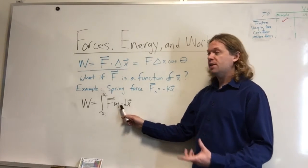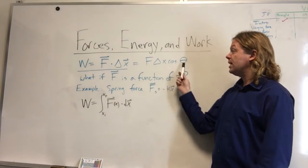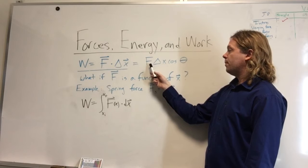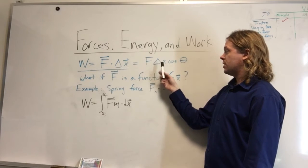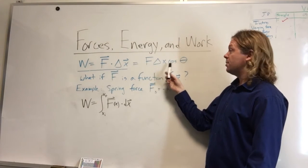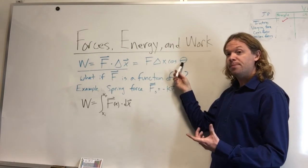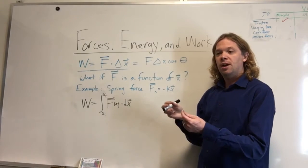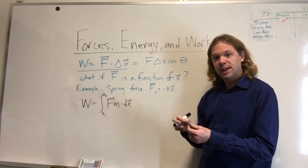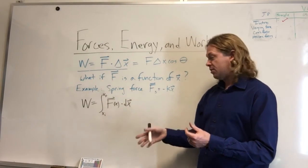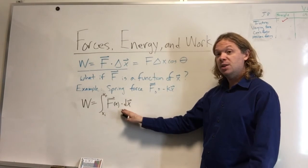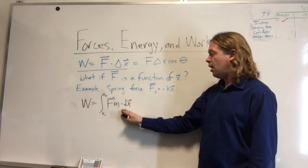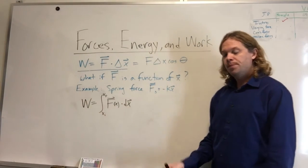Recall this is still a dot product, so you still need to express it in terms of the magnitude of the force and the magnitude of the displacement times the cosine of the angle between them. Or of course you could just multiply the components together and add them together. But somehow that dot product needs to be evaluated first before you actually find the work.